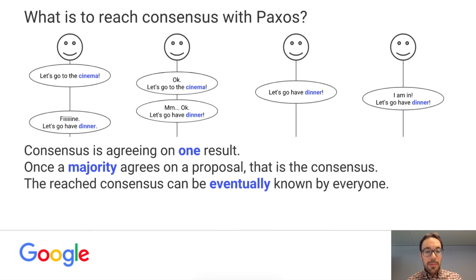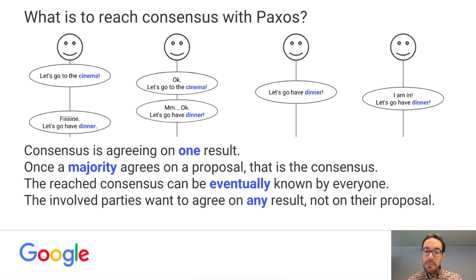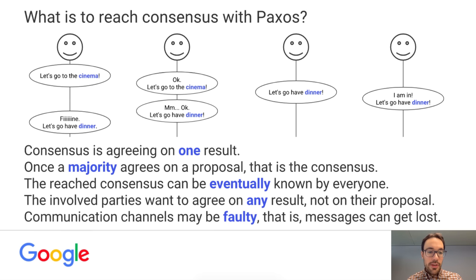Any reached consensus can be eventually known by everyone — they could ask around whether a consensus was reached and what the agreement was. In Paxos, the involved parties want to agree on any result, not on their proposal, so they will contribute towards reaching consensus. And finally, communication channels may be faulty — that is, messages can get lost. In this case, you observed that someone wasn't listening, they proposed a different thing to do, but in the end an agreement was reached.